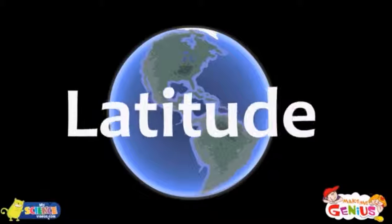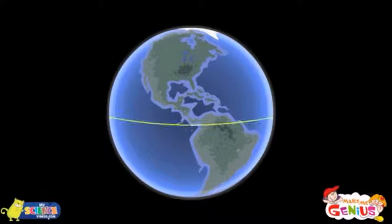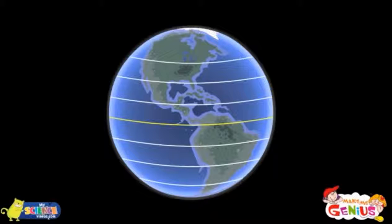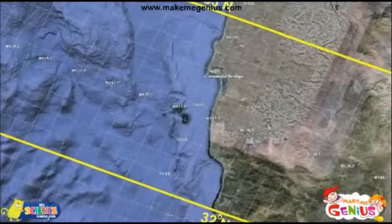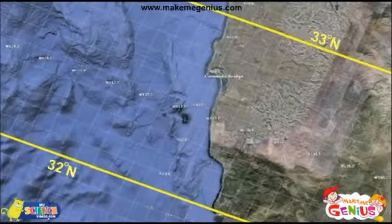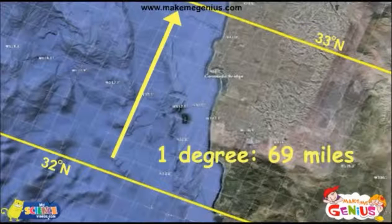We will talk about latitudes. Lines of latitude, also known as parallels, circle the earth from east to west. These lines are the same distance apart, about 69 miles.